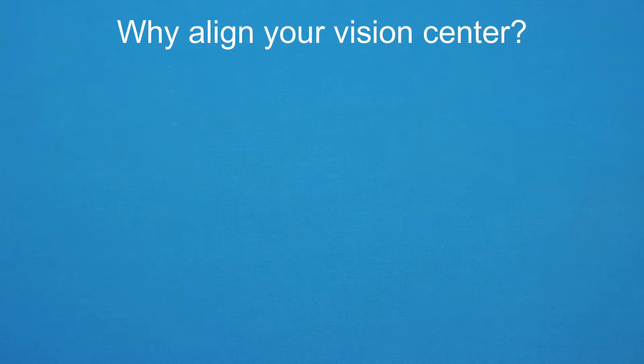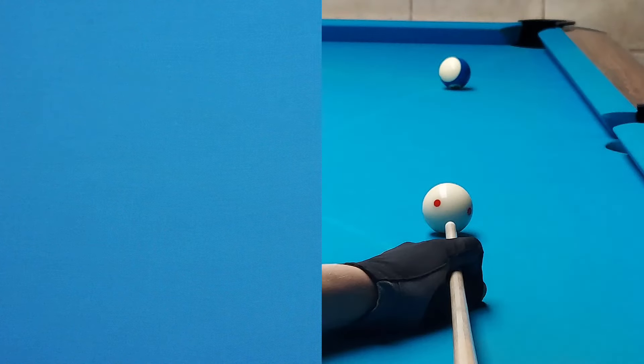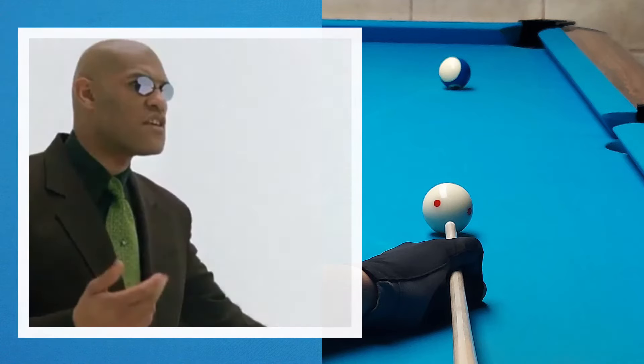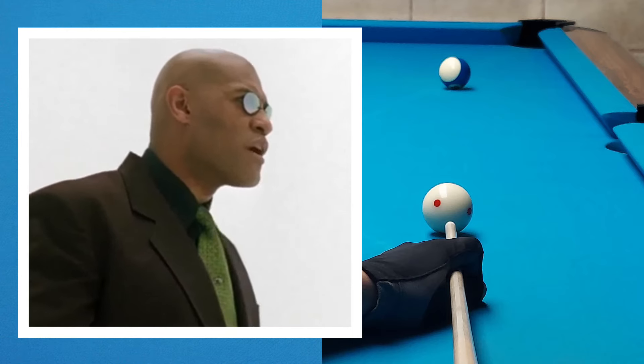Why is it important to align your vision center? It is possible to learn to play well without a perfectly aligned vision center. Many players do. Let's take a look at a couple of examples. Consider this image of what you might see while down on a shot. Where is this image kept? Is it real? Real is simply electrical signals interpreted by your brain.